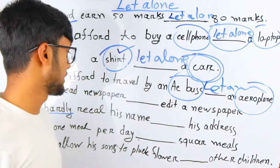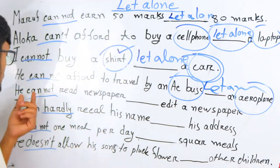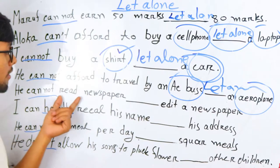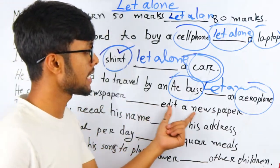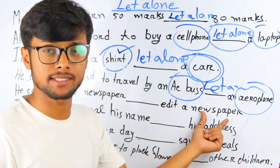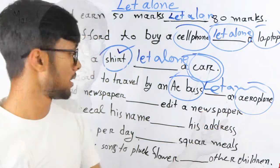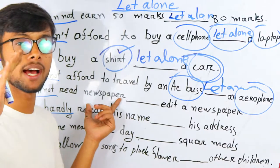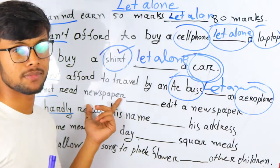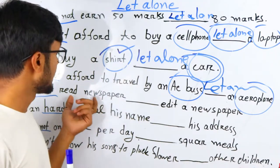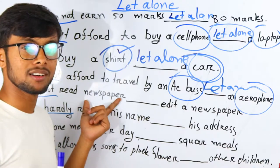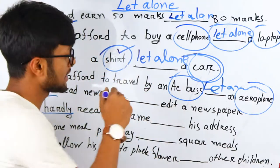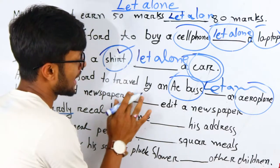Fifth sentence: 'He cannot read a newspaper, let alone edit a newspaper.' This person is not educated enough to read a newspaper, so how is it possible to write or edit a newspaper? At this moment you use 'let alone.'